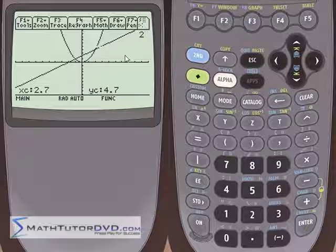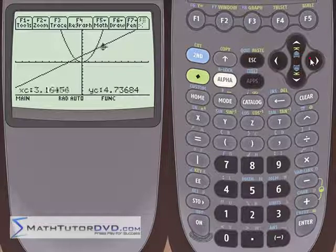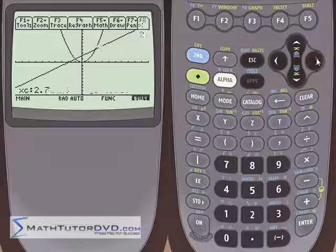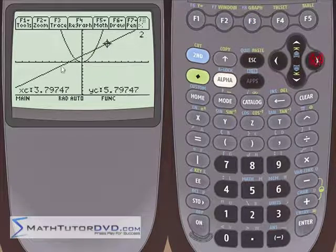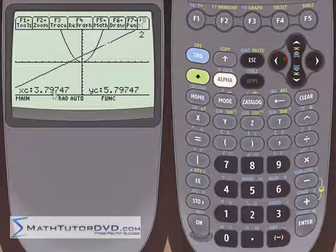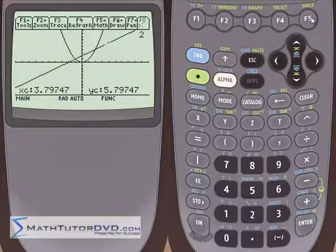So that's really all there is to it. If you're tracing through a graph here, and you're like, wow, this is 3.79 and this is 3.92, but I really want to know what 3.81 is. What is this function equal to at x is equal to 3.81?